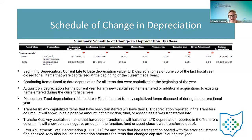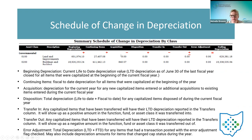Capitalization threshold changes behave the same way for depreciation as they do for original cost figures. If the threshold changes and items' capitalization status changes, the depreciation differences are accounted for in the error adjustment column rather than affecting beginning depreciation. This ensures beginning depreciation balances the prior year's ending depreciation. The formula is: beginning depreciation, plus continuing items, plus acquisitions, minus dispositions, plus or minus transfers, plus or minus error adjustments equals ending depreciation.